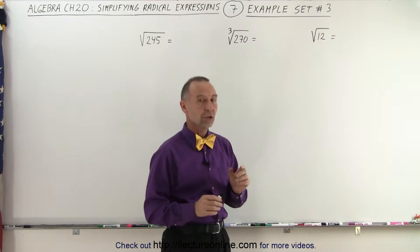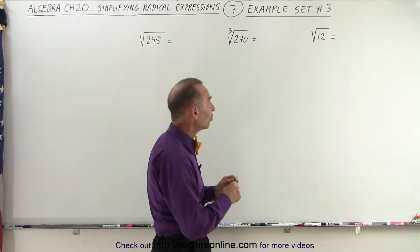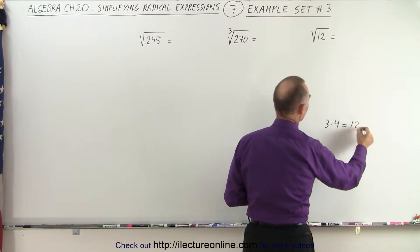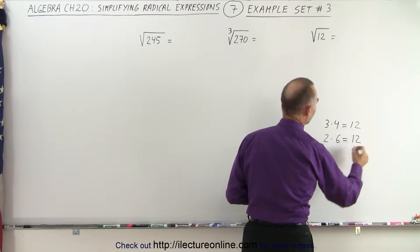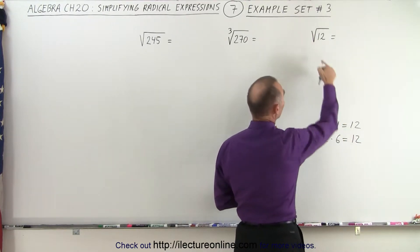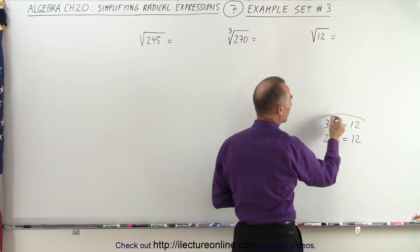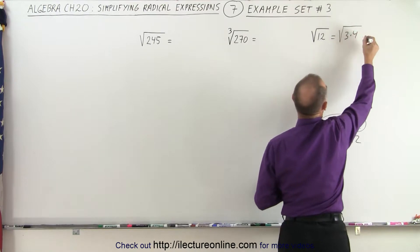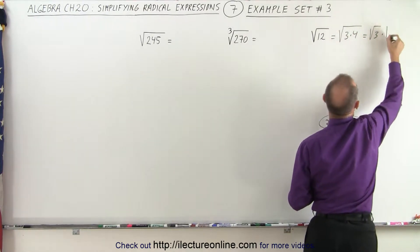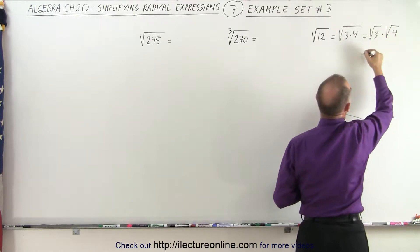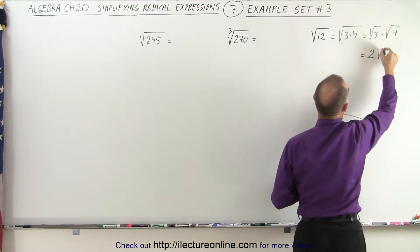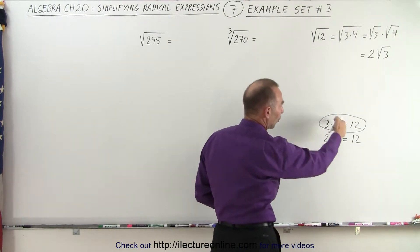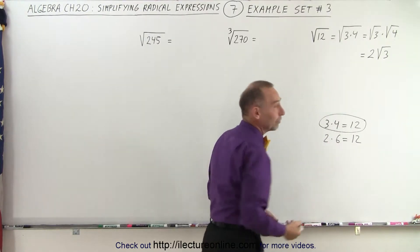First of all, when the numbers are small, you can probably think of all the combinations that make up the number 12. For example, 3 times 4 equals 12, or 2 times 6 equals 12. And notice 4, you can actually take the square root of 4, so this would be the preferred way of writing 12. So this can be written as the square root of 3 times 4, which is equal to the square root of 3 times the square root of 4. And of course, the square root of 4 is equal to 2, so this could be written as 2 times the square root of 3. So when the numbers are small, you simply look at all the combinations and then look for one of the factors that you can take the square root of in this case.